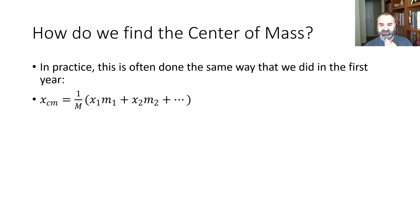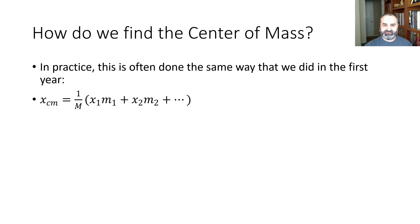So let's look at a first year example and see how we'd actually apply this and where this expression comes from. How far to the right of point A is the center of mass of this uniform density and depth object? Why uniform density and depth?